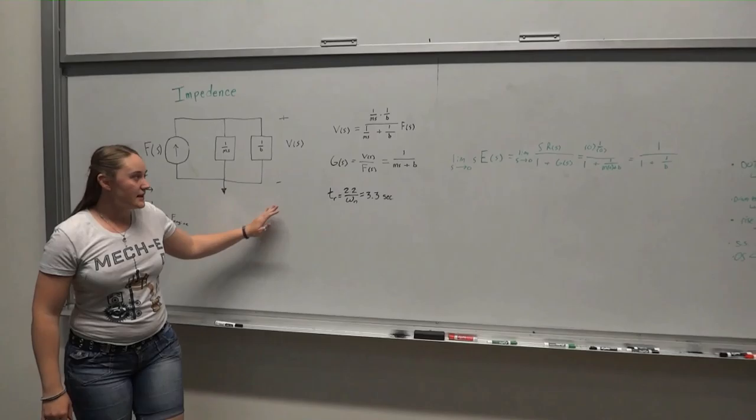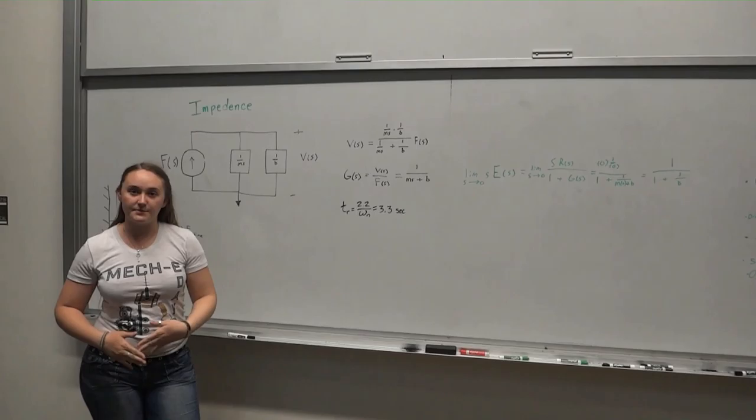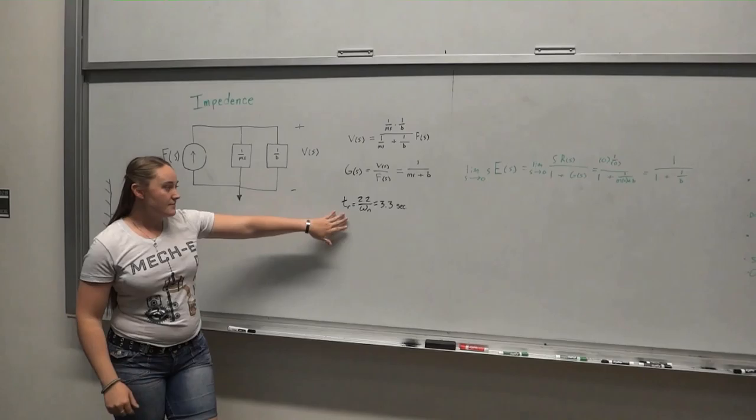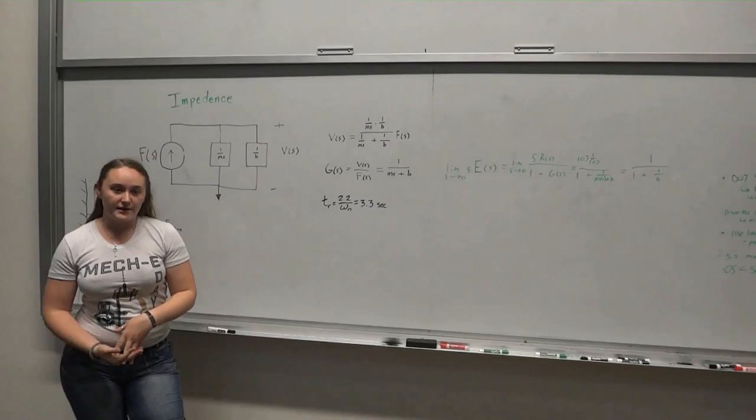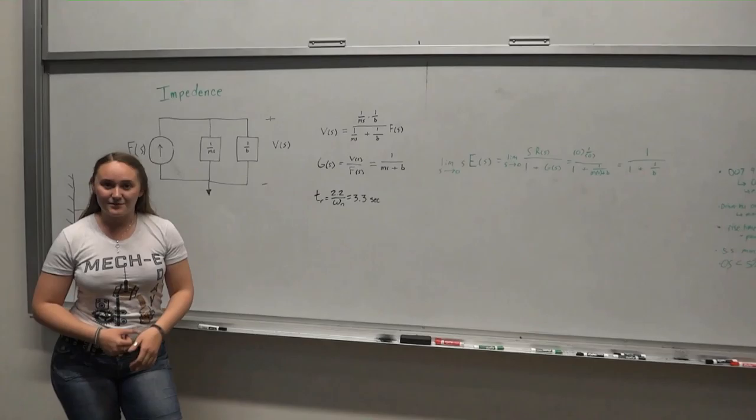So once we have our impedance and we use that to find our transfer function, we want to analyze our open loop for a couple things including stability and rise time. We know that the system is stable because it only has one pole and that one pole is in the left-hand plane. Since we already know it's stable, we can move on to rise time. The rise time here is calculated Tr equals 2.2 divided by omega n. Using this equation and some other mathematics that you can find in our report, we calculated the rise time to be 3.3 seconds. Our initial goal was to have rise time under 10 seconds. 3.3 is definitely under 10, so we hit that goal of just our open loop system. So we're definitely going to hit that for our closed loop system moving forward.